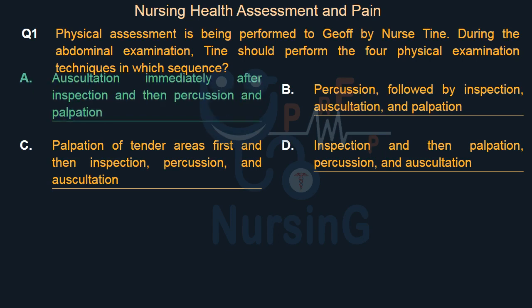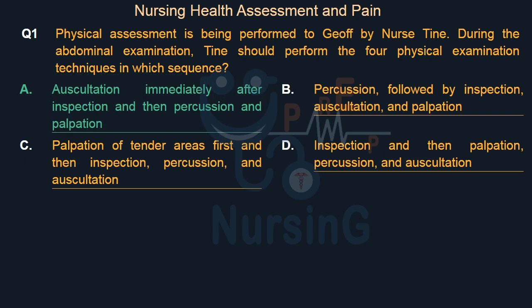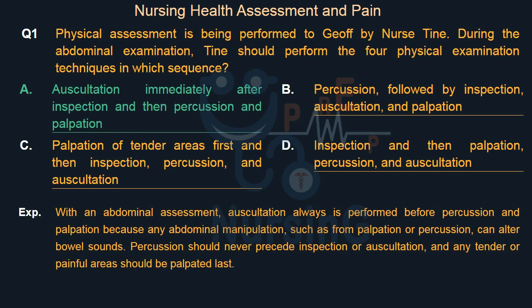The right answer is Option A: Auscultation immediately after inspection, and then percussion and palpation. With an abdominal assessment, auscultation is always performed before percussion and palpation, because any abdominal manipulation — such as from palpation or percussion — can alter bowel sounds. Percussion should never precede inspection or auscultation, and any tender or painful areas should be palpated last.